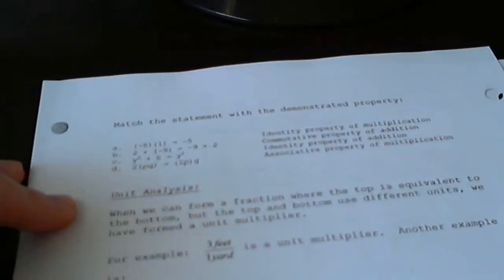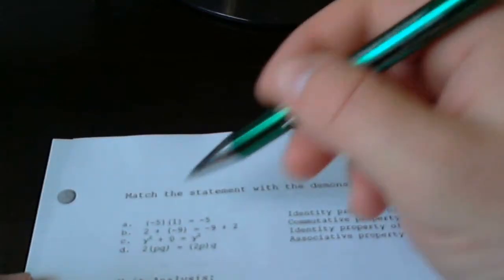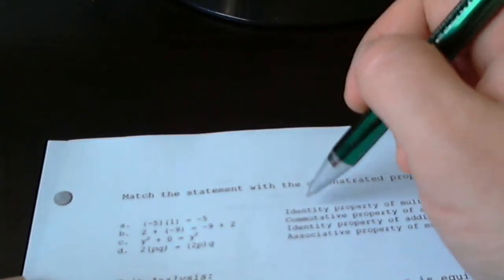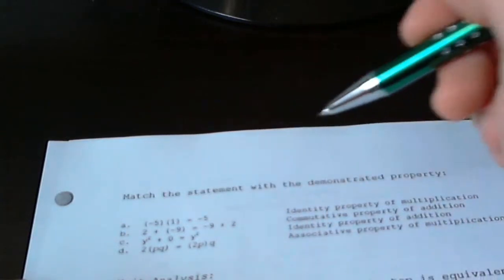Let's go to the back. We want to do a quick review of our statements that we've talked about over the last couple lessons. This was supposed to be matching, but really all the properties are just right across from each other. The identity property of multiplication - here's negative 5 times 1, giving us negative 5 back.